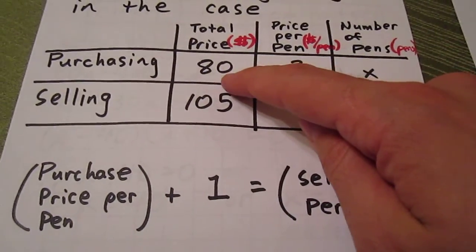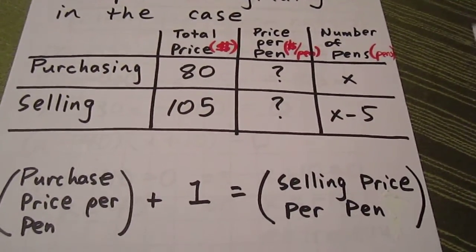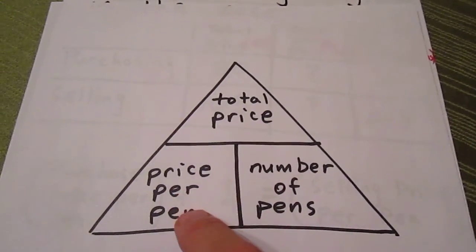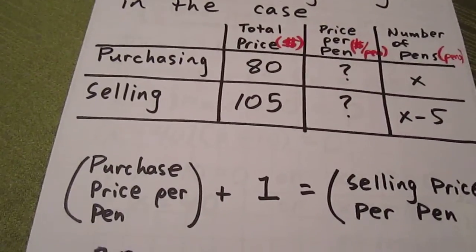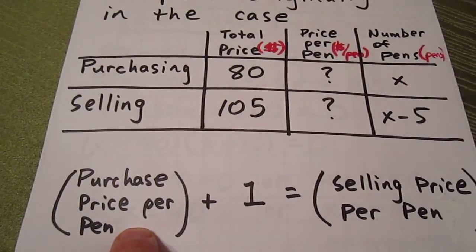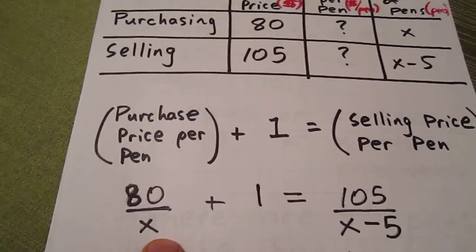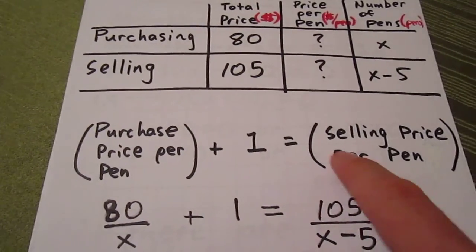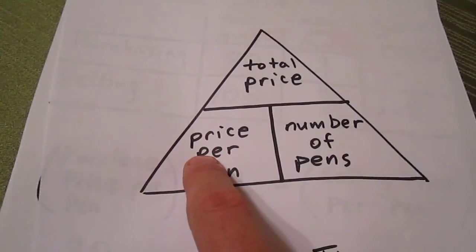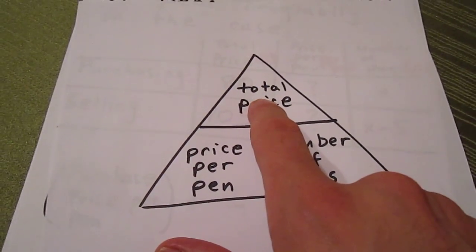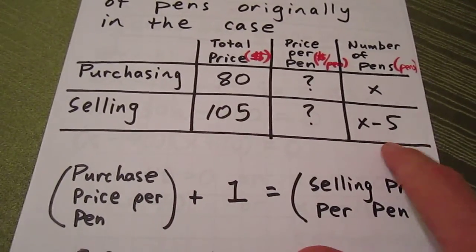Going back to our table and our pyramid, we can say that the purchase price per pen is equal to the total price over the number of pens. 80 over X plus one equals the selling price per pen. Again, going back to our pyramid, the selling price per pen will be the total price with respect to selling over the number of pens she sold. That's 105 over X minus 5.